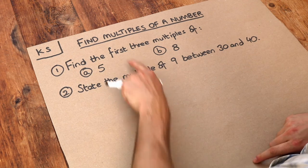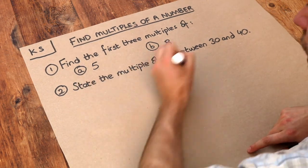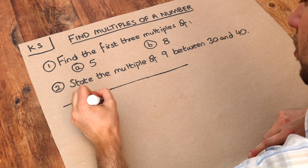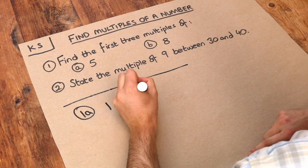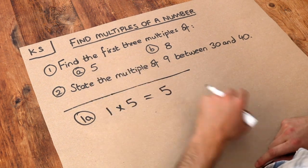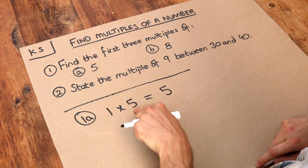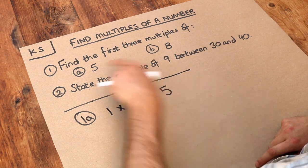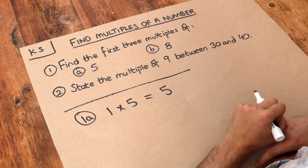Let's use this principle to find the first three multiples of five. If we have one lot of five, one times five is five. I know I said there are multiples of something when you have more than one lot of it, but in maths, actually one lot of something is still a multiple of it. So five is a multiple of five. Any number is a multiple of itself.